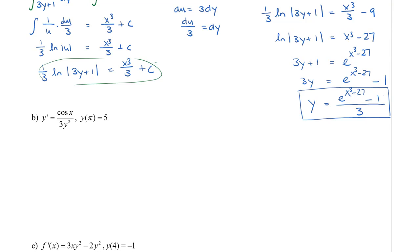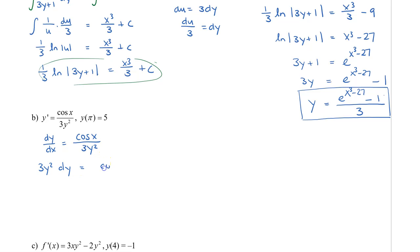Let's do one with some trig. We have y prime equals cos x divided by 3y squared, and y of pi equals 5. Change y prime to dy/dx. Multiply 3y squared to the left side and move dx to the right. Putting in the integral symbol on both sides, we get 3y cubed over 3 equals sin x plus c, which simplifies to y cubed equals sin x plus c.